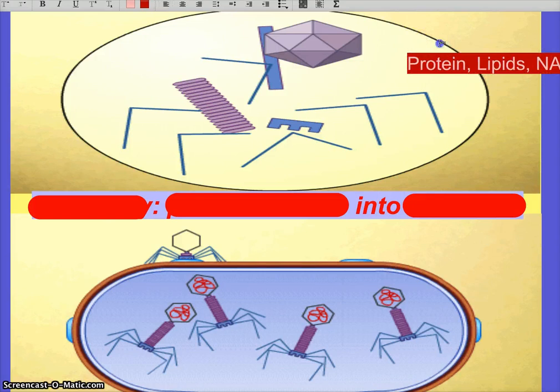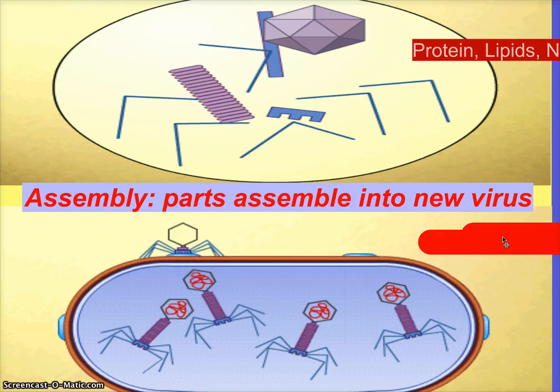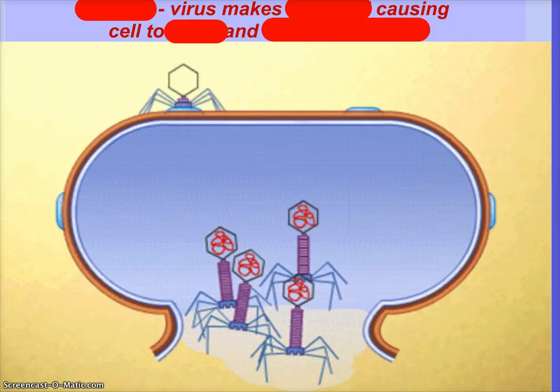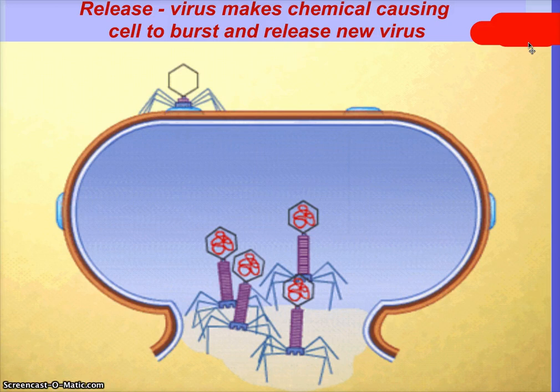Then in almost the last phase, the virus parts assemble into a virus — you take the protein, the nucleic acid, and you make a virus. Then comes the release phase: the virus makes a chemical and it causes the cell to burst, and then the viruses are set free. From one virus, we made four. And those four are going to look for a host cell, attach, enter, reproduce, assemble, release a chemical, and go look for more.